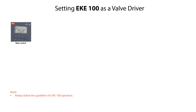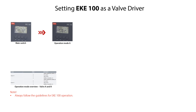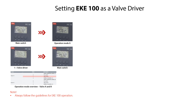To configure the EKE100 as a valve driver for valve A, from the main switch CR12 mode, press the arrow down key to access the operation mode A, specified as ACTR. Press the enter key to access the available operating modes. The value should be set as 1 for valve driver. Press the arrow up or arrow down keys to get the needed value, then press the enter key to confirm value 1 and return to the ACTR mode. Press the arrow up key to return to the CR12 mode, from where you can access and set relevant valve driver parameters by pressing the arrow down key.